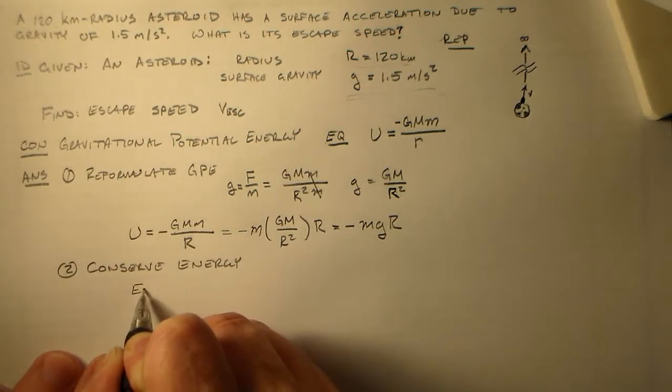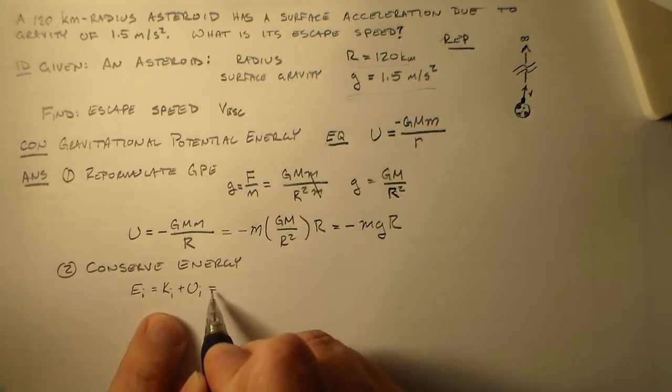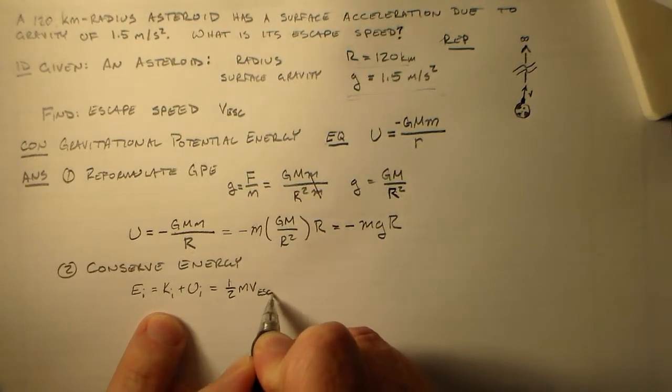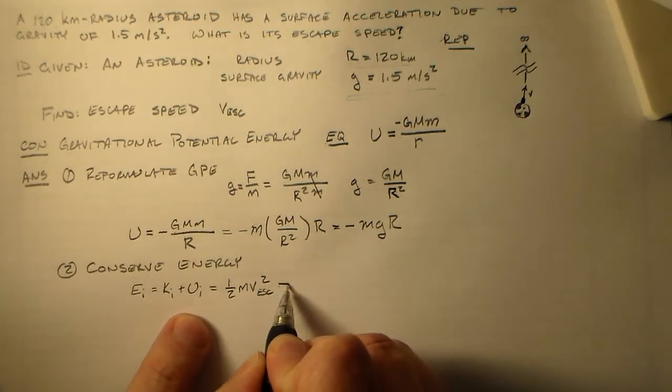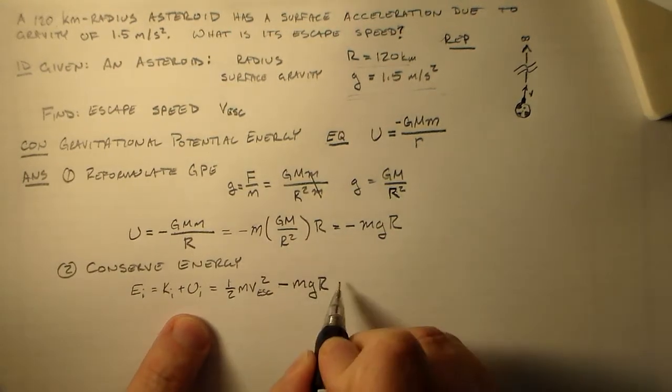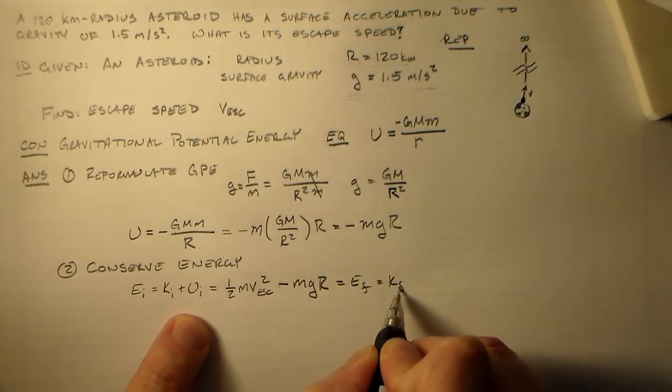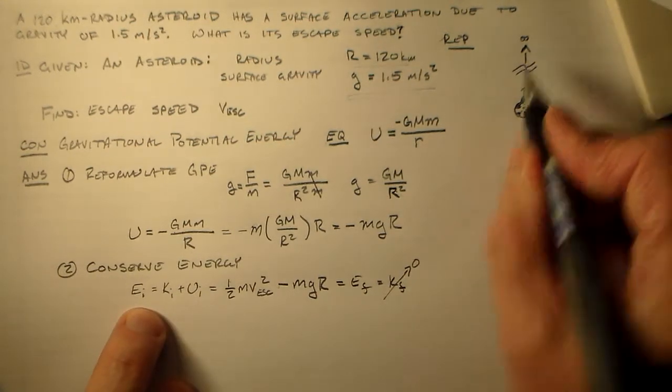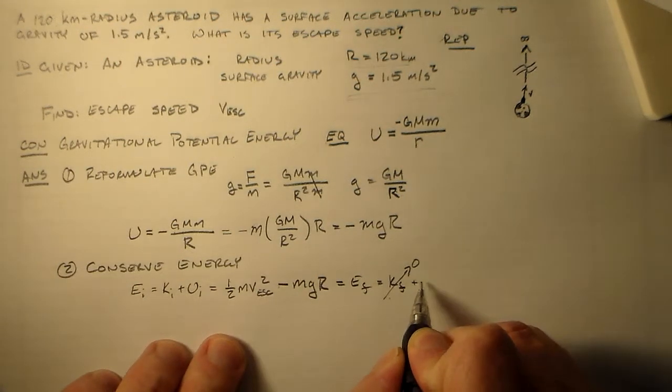So that's my initial energy, which is equal to my initial kinetic energy, plus my initial potential energy. That's equal to one half M v escape squared, plus the potential energy, which is minus MgR. Right? And that's equal to my final energy, which is equal to K final, which is just the minimum to get to infinity. Since we have the minimum energy to get to infinity, K final is zero. We're just barely getting to infinity. And then at infinity, there's no nothing. There's no speed.